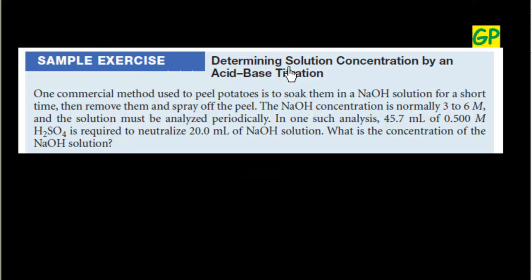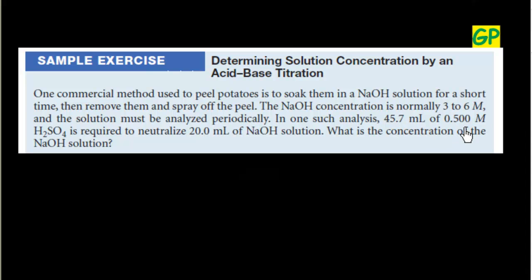This problem is related to finding solution concentration by acid-base titration. One commercial method used to peel potatoes is to soak them in a NaOH solution for a short time and then remove them and spray off the peel. The NaOH concentration is normally 3 to 6 M and the solution must be analyzed periodically. In one such analysis, 45.7 mL of 0.5 M H₂SO₄ is required to neutralize 20 mL of NaOH solution. What is the concentration of the NaOH solution?